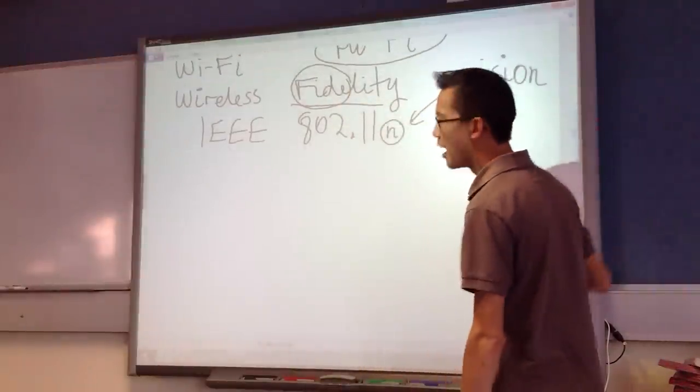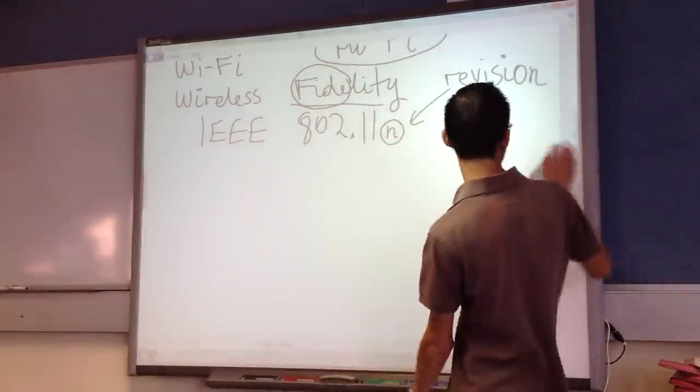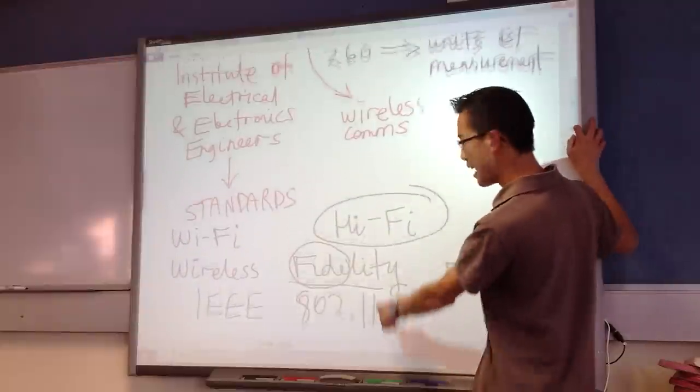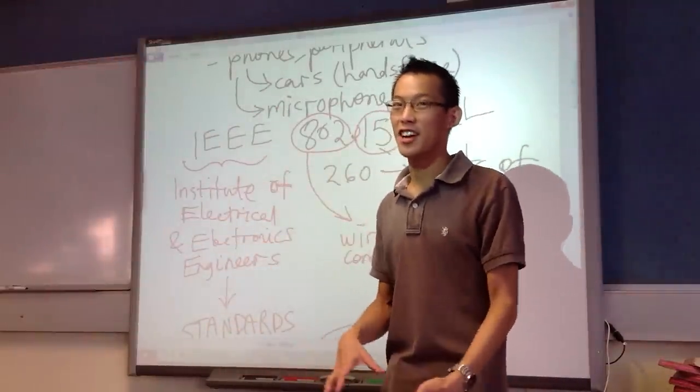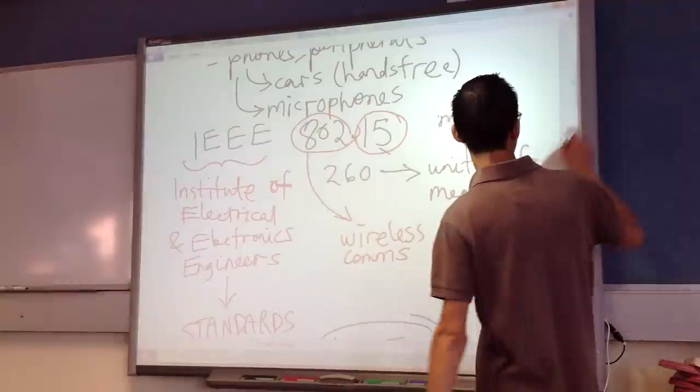All right, now, under 802, I mean, you can kind of assume, if this is 802.11, and this is 802.15, there's all these other ones in between there, right? There are a lot. They're not as common, which is why I'm not going to deal with them.